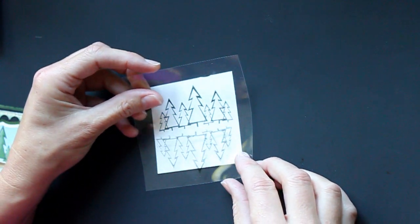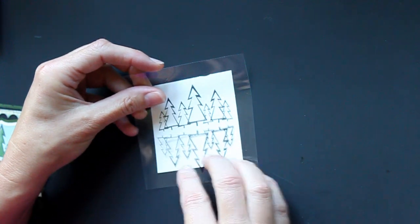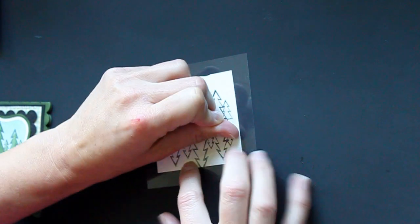Place it where you want your reverse image to be and wrap over it to transfer the ink onto your cardstock.